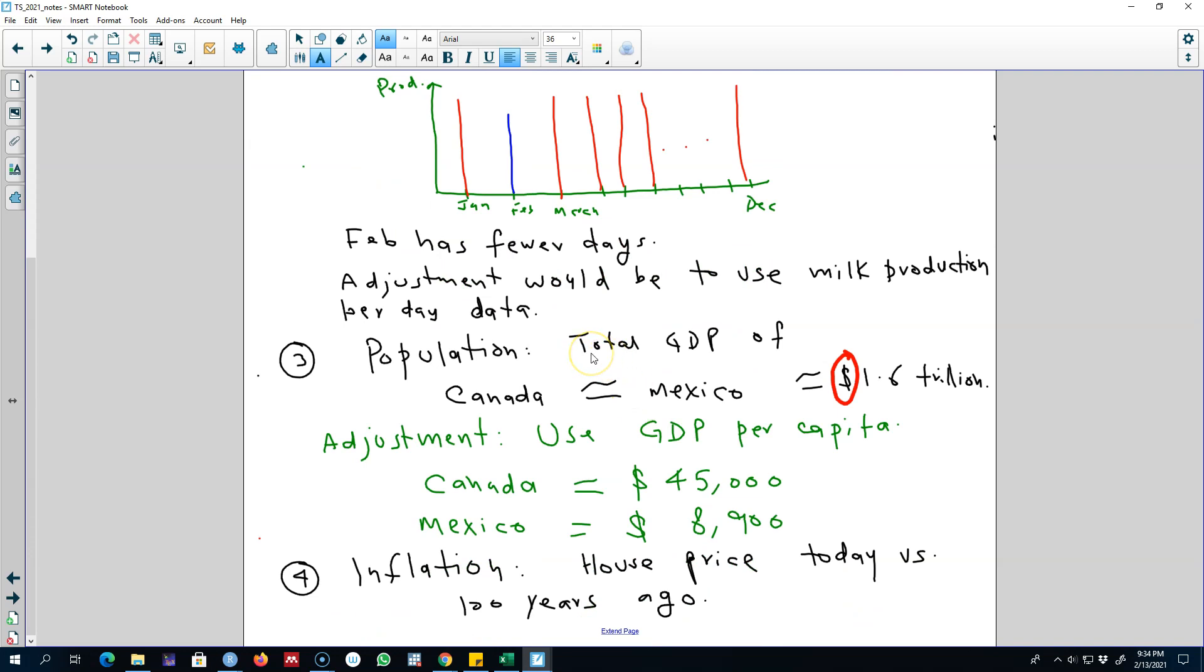An example is the total GDP of Canada and Mexico, which is about 1.6 trillion dollars. If you look at only this number, it seems like the standard of living in Canada and Mexico is identical. But the problem is the population size of Mexico is far more than the population size of Canada.